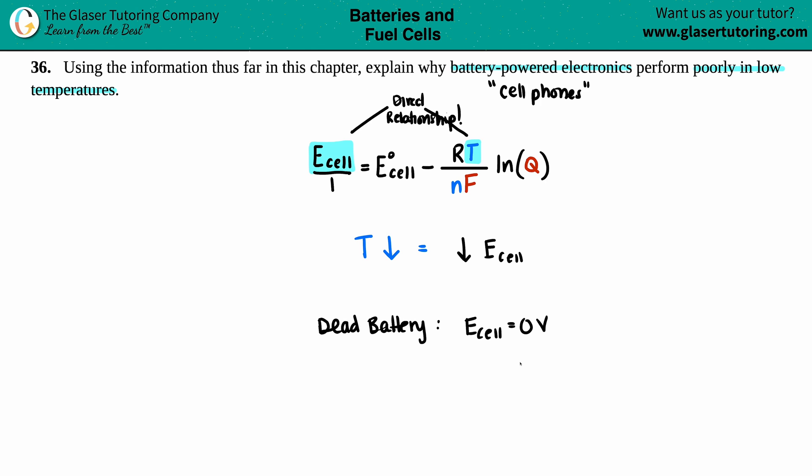And that is why battery powered electronics, aka cell phones, perform very poorly in low temperatures. Because as you drop in temp, that E cell will drop. And if it's getting so low, zero is the lowest it can go because then the battery is just going to die. And that's it.